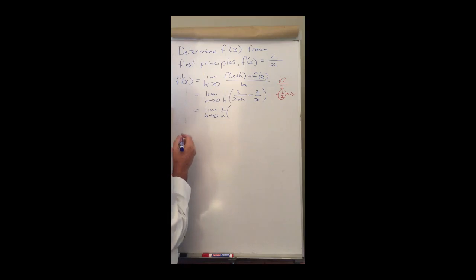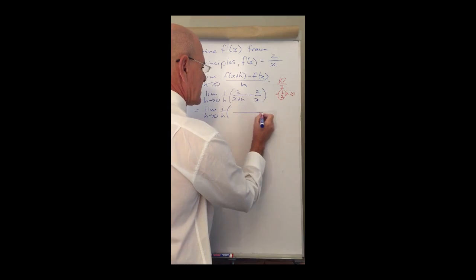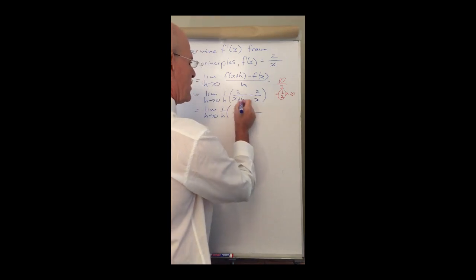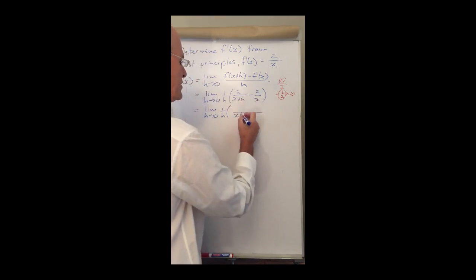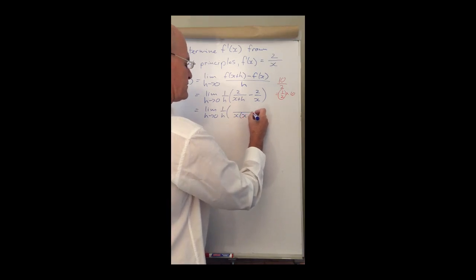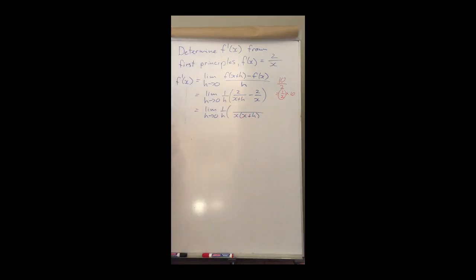Now we will see we have two fractions over here and what we need to do when we have fractions is we need to get the LCD. Now the LCD in this case is very simple. I just multiply these two denominators with each other, so I have x times (x+h).